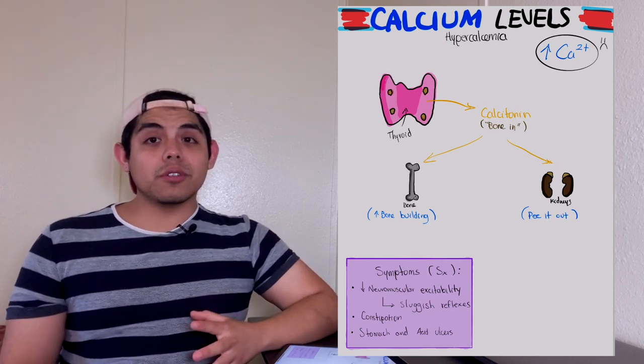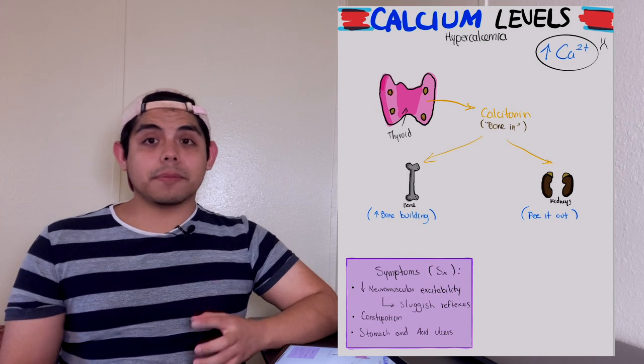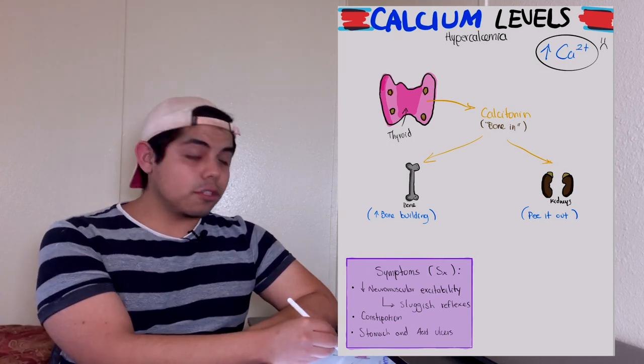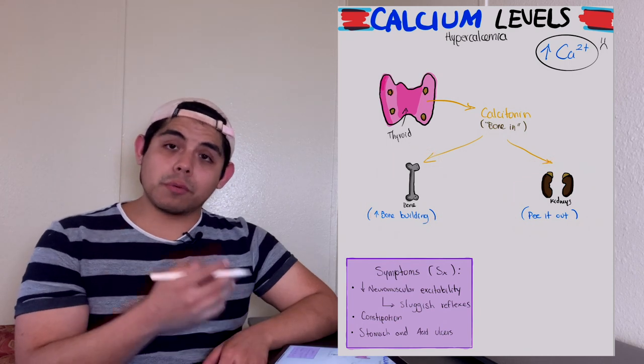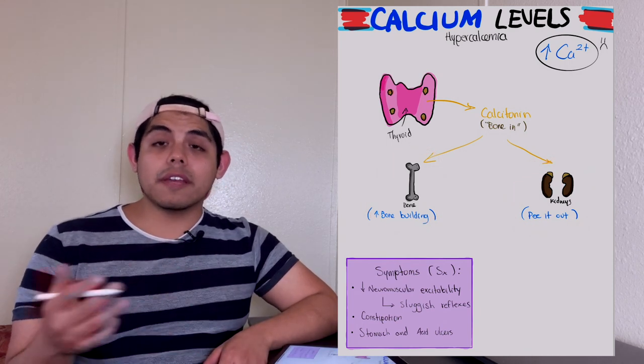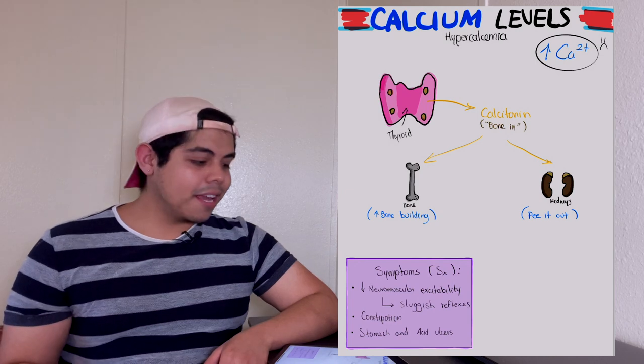Remember that the calcium level is going to be greater than 11 milligrams per deciliter. After these two processes, the calcium will go back into the normal level, which again is 9 to 11 milligrams per deciliter.